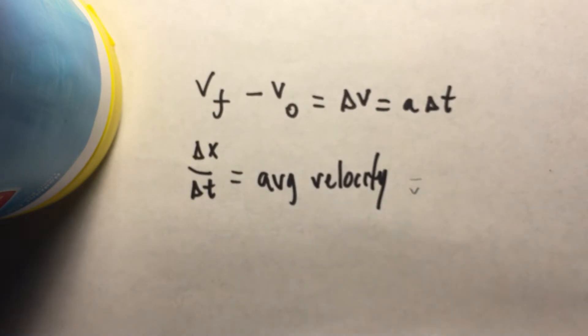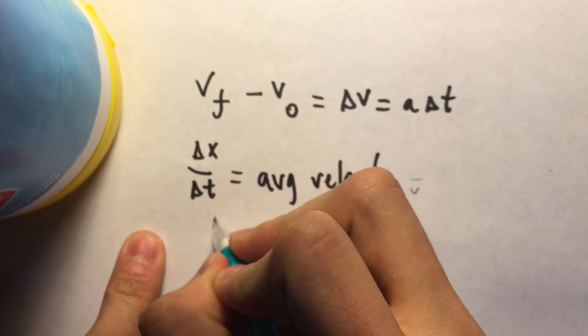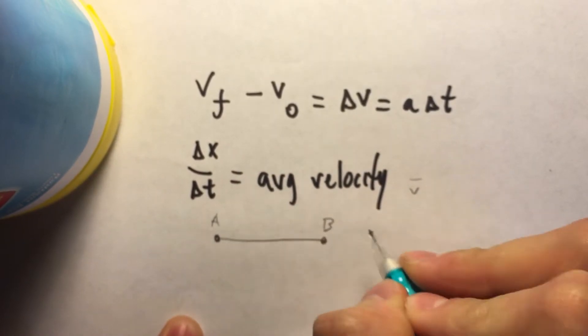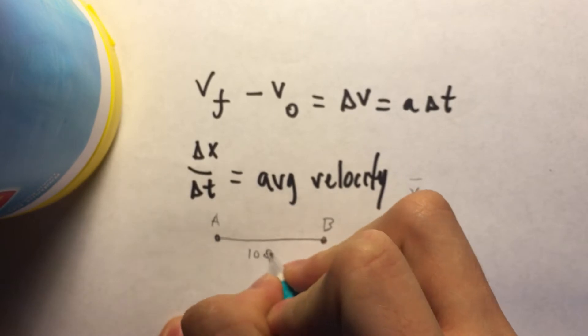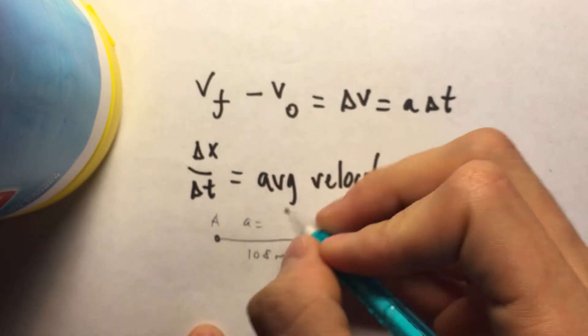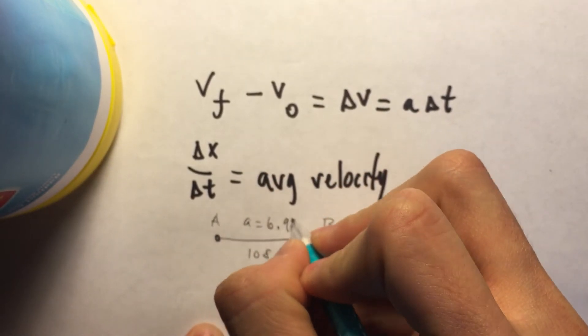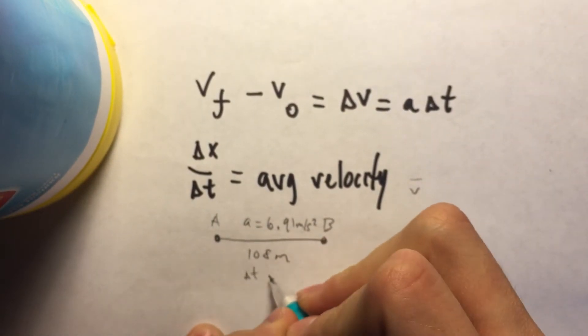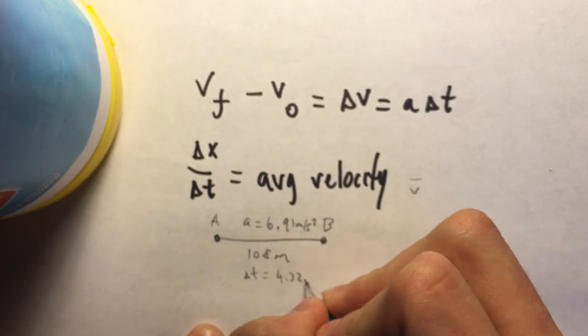So, with that in mind, we had established that we had point A, which is checkpoint, and we had point B. The distance between these was 108 meters, and our acceleration given now is 6.91 meters per second squared. And we also had a change in time which equals 4.32 seconds.